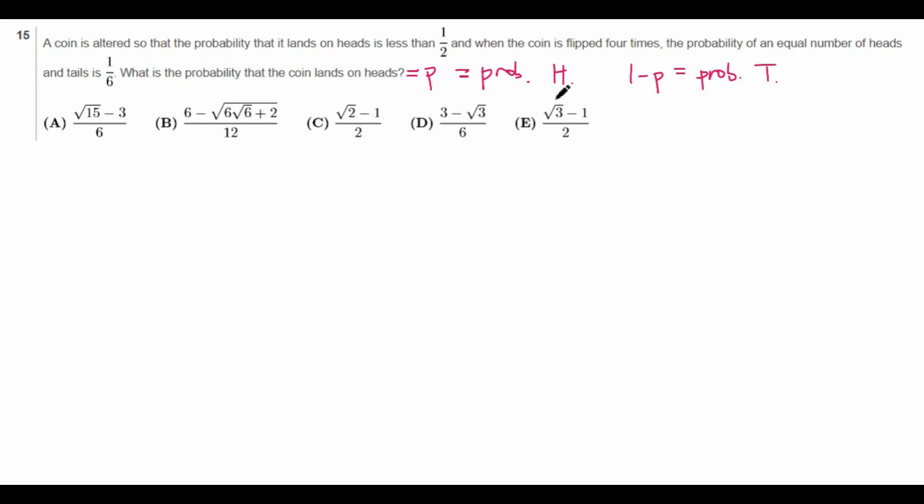So what do we know about this P? Well, first of all, it says that the probability that it lands on heads is less than one-half, so P is less than one-half. And now comes the harder piece of information. When the coin is flipped four times, the probability of an equal number of heads and tails is one-sixth. So let's try to think about how we interpret this.